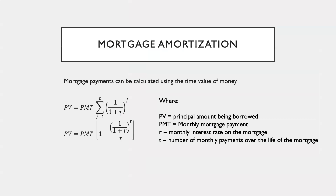Here is a manual formula on how you can compute the present value of amortization using the present value formula, where PV is equal to the principal amount being borrowed, PMT is equal to the monthly mortgage payment, R is the monthly interest rate on the mortgage, and T is the number of monthly payments over the life of the mortgage.